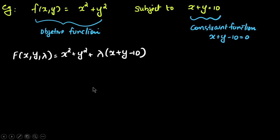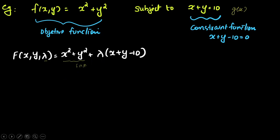The unconstrained function is written with capital F of x, y, lambda. We add the additional lambda variable: x squared plus y squared — this is the f(x,y) part — plus lambda times the constraint g(x), which is x plus y minus 10. So the Lagrangian is F(x, y, λ) = x² + y² + λ(x + y − 10).